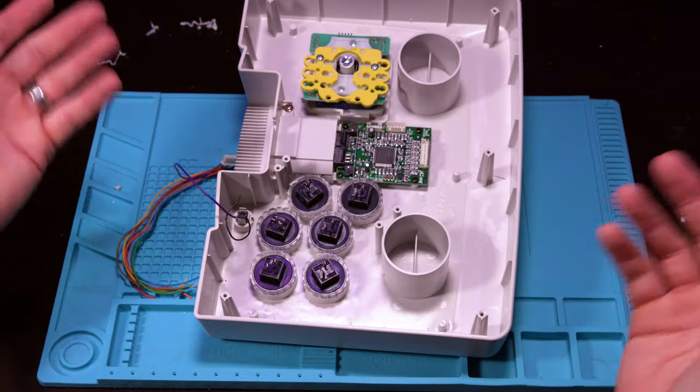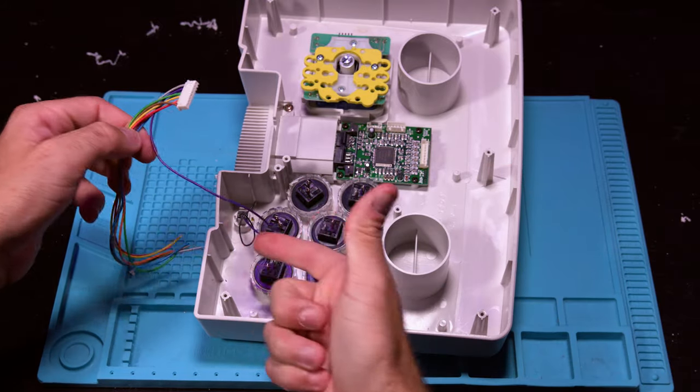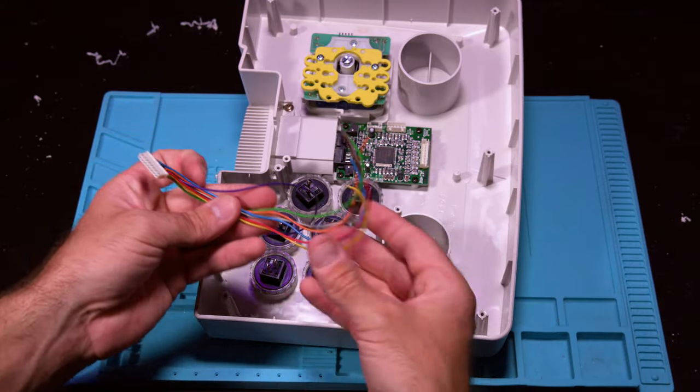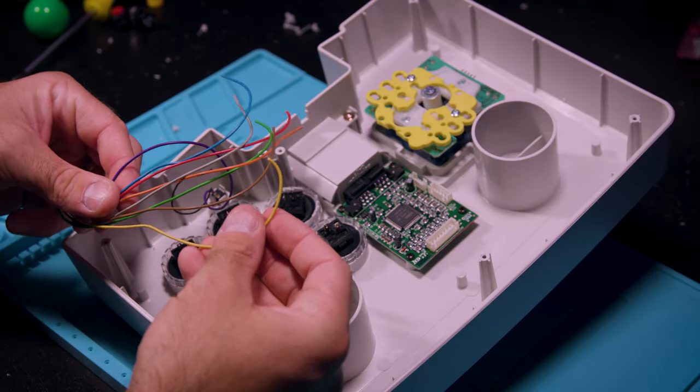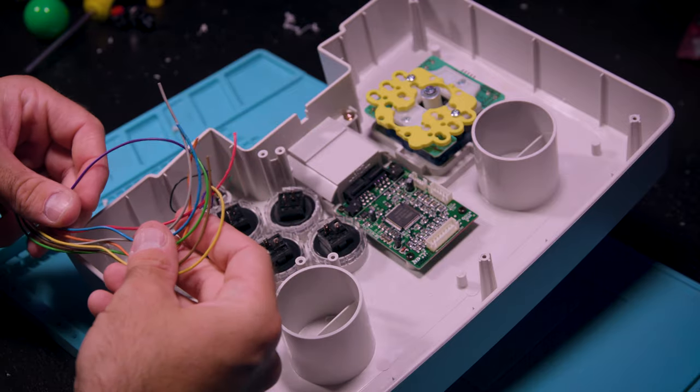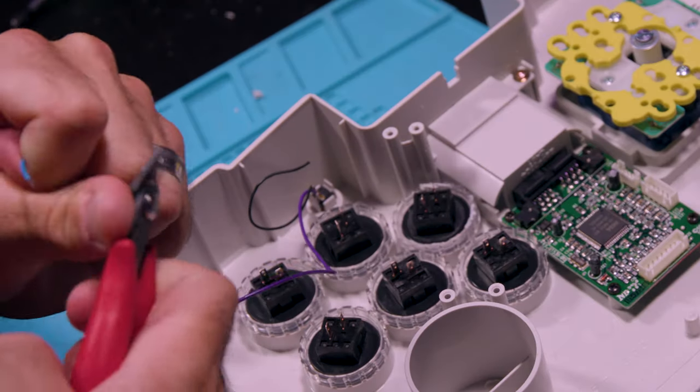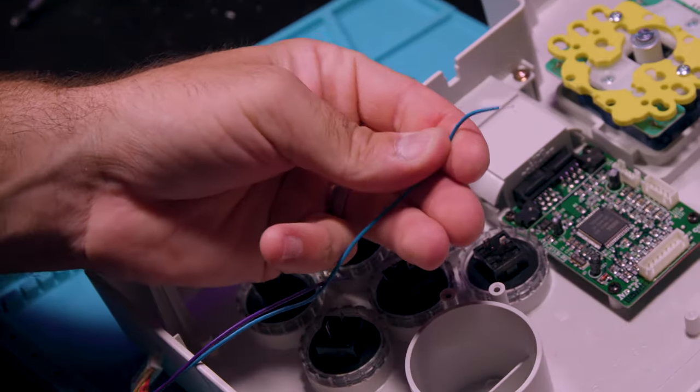Now it's time to start our wiring. We already have our start button connected, and now we need to connect each one of our buttons. Let's throw quick disconnects on the ends of these guys and put them right back on these buttons.